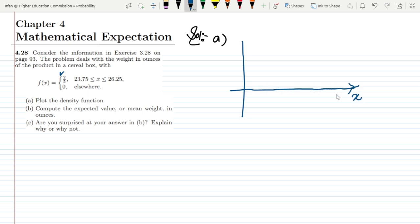This is x while here on the y-axis we have the density which is f(x) while the values range is from 23.75 to 26.25. So let me have these values from 23.75 up to 26.25.